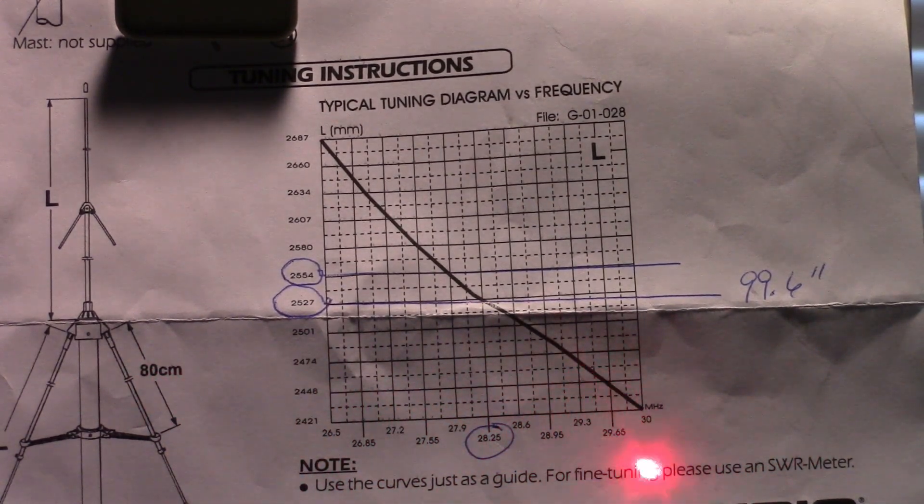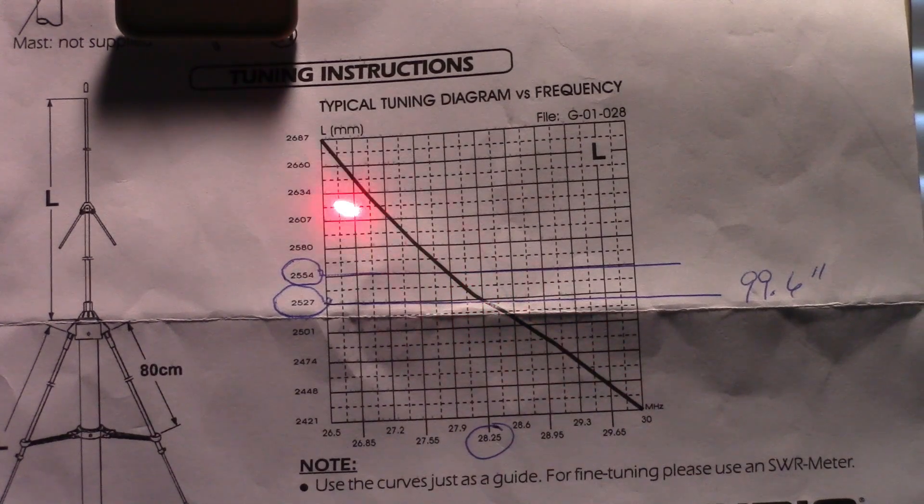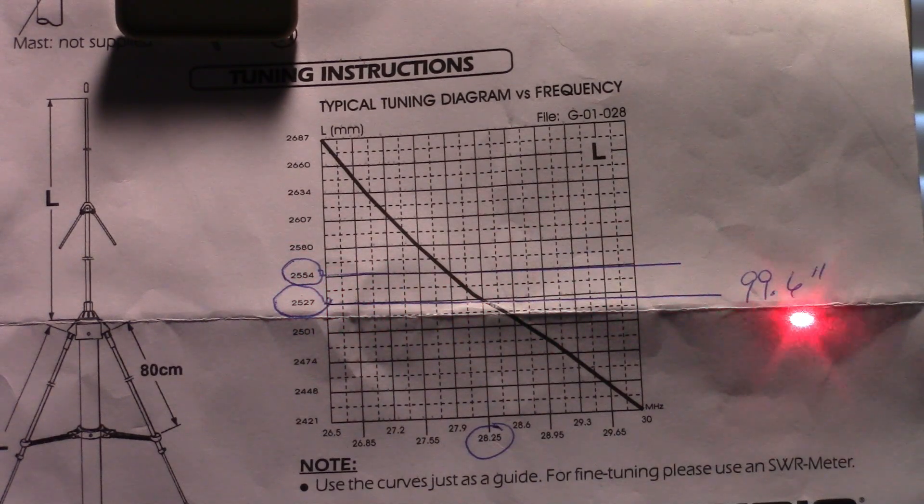You just follow whatever frequency you choose up until it intersects with this line right here, and that tells you the length that your radiators need to be. In my case, it came out to be 99.6 inches, which is what I set both the ground planes and the vertical radiator. All three ground planes and the vertical radiator need to be the same length in order to tune the antenna correctly.